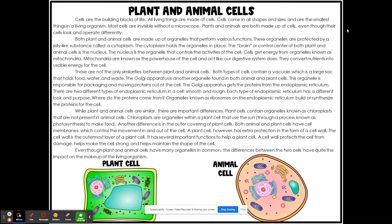Both plant and animal cells are made up of organelles that perform various functions. These organelles are protected by a jelly-like substance called cytoplasm. The cytoplasm holds the organelles in place. The brain or the control center of both the plant and animal cell is the nucleus. The nucleus is the organelle that controls the activity of the cell. Cells get energy from organelles known as the mitochondria. Mitochondria are known as the powerhouse of the cell and act just like our digestive system does. They convert nutrients into usable energy for the cell.